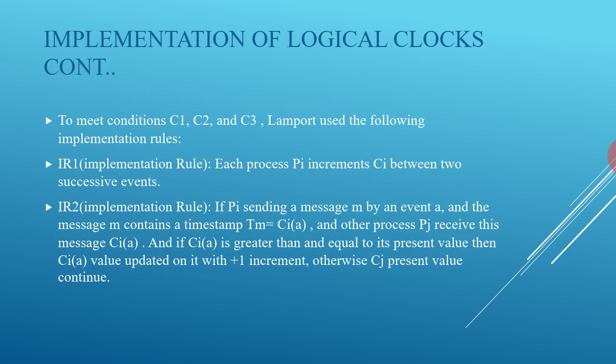To meet conditions C1, C2, and C3, Lamport used the following two implementation rules. First, each process Pi increments Ci between two successive events. Second, if Pi sends a message M by event A, the message M contains a timestamp Tm equal to Ci(A). When another process Pj receives this message, if Ci(A) is greater than or equal to Pj's present value, then Pj's clock is updated to Ci(A) plus one; otherwise, Pj's present value continues.